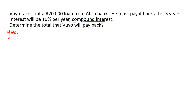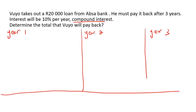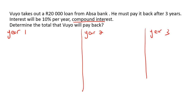So year number one, then we'll do a calculation for year number two, and then we'll do a calculation for year number three. In year number one, we're going to take 10% of 20,000. Of means times, and if you do this, you should get 2,000 rand.